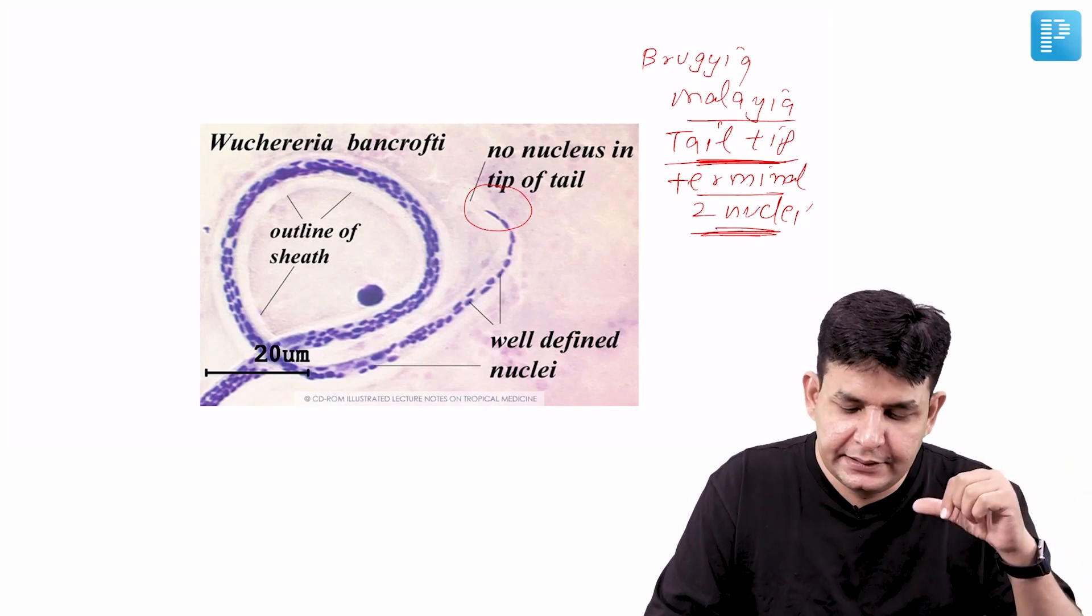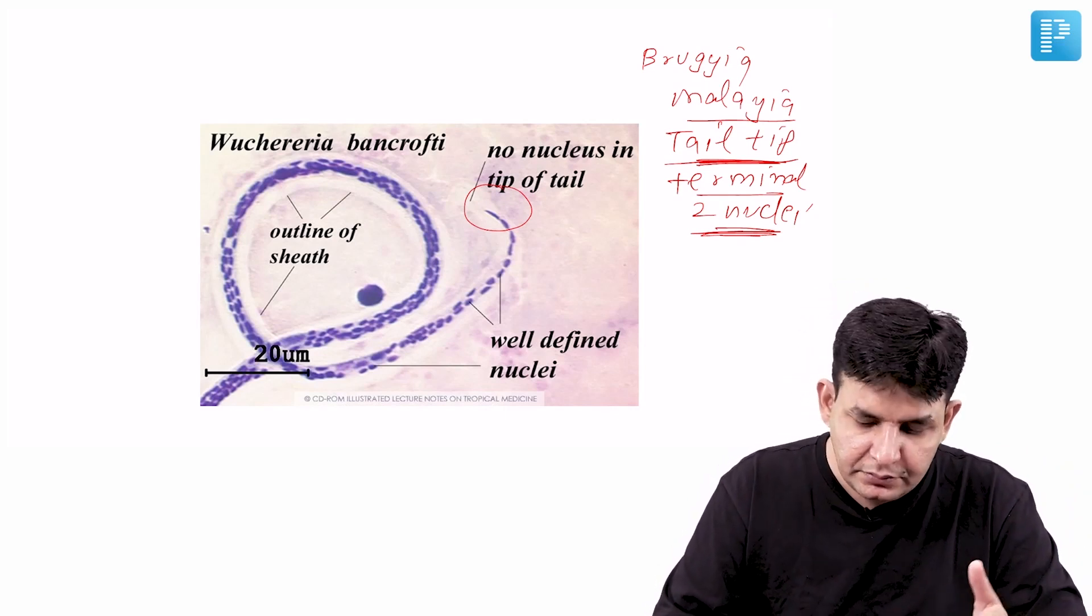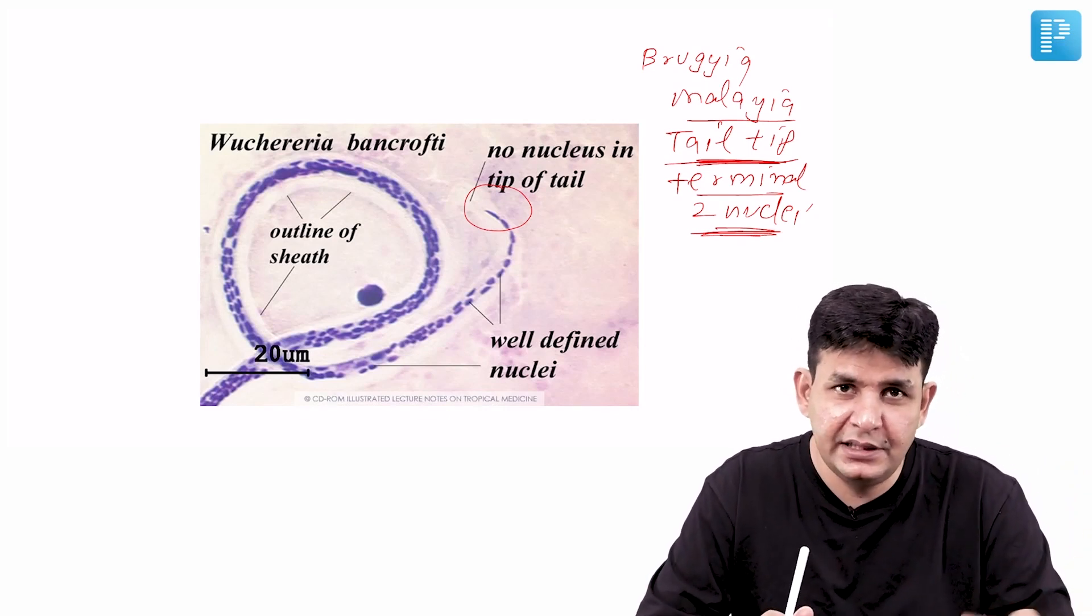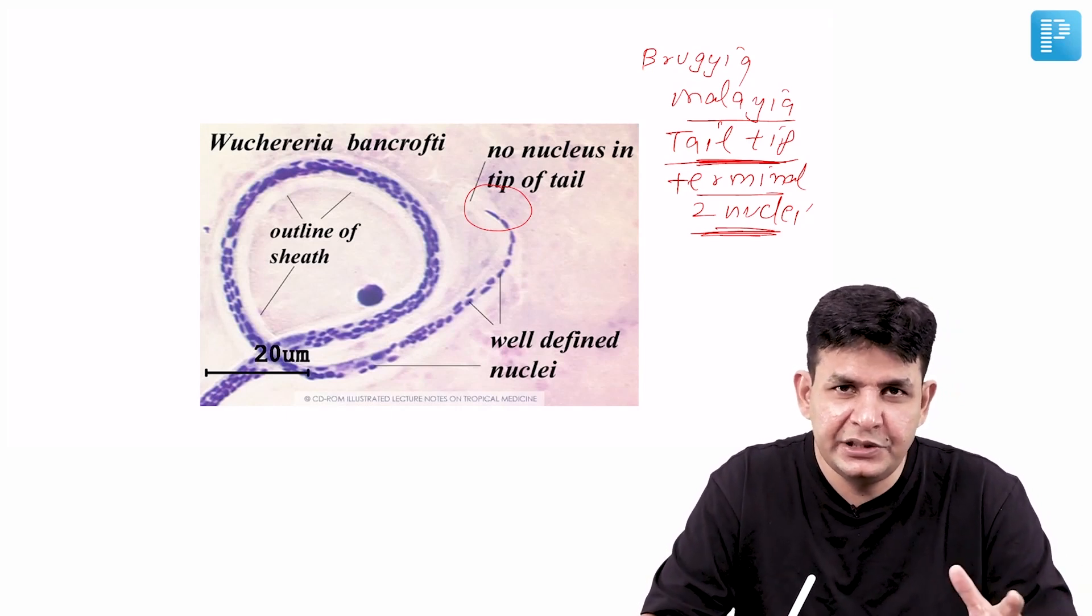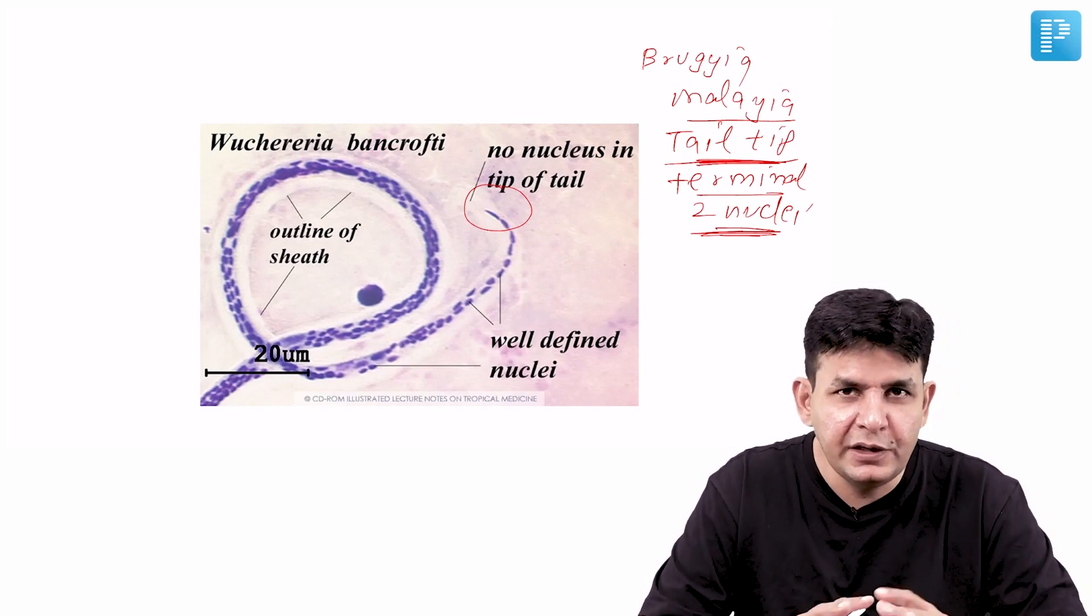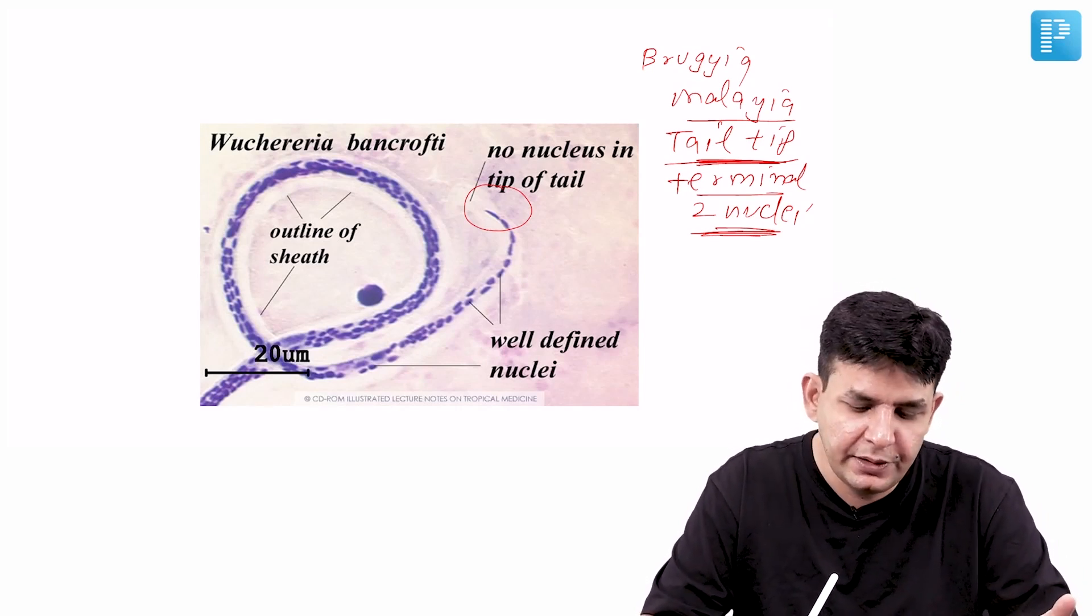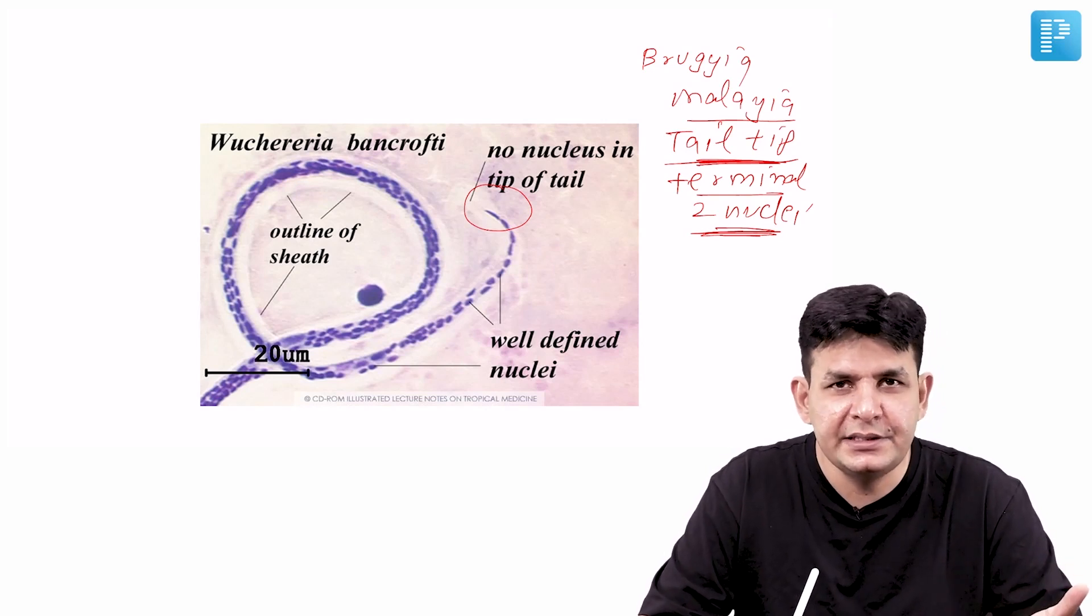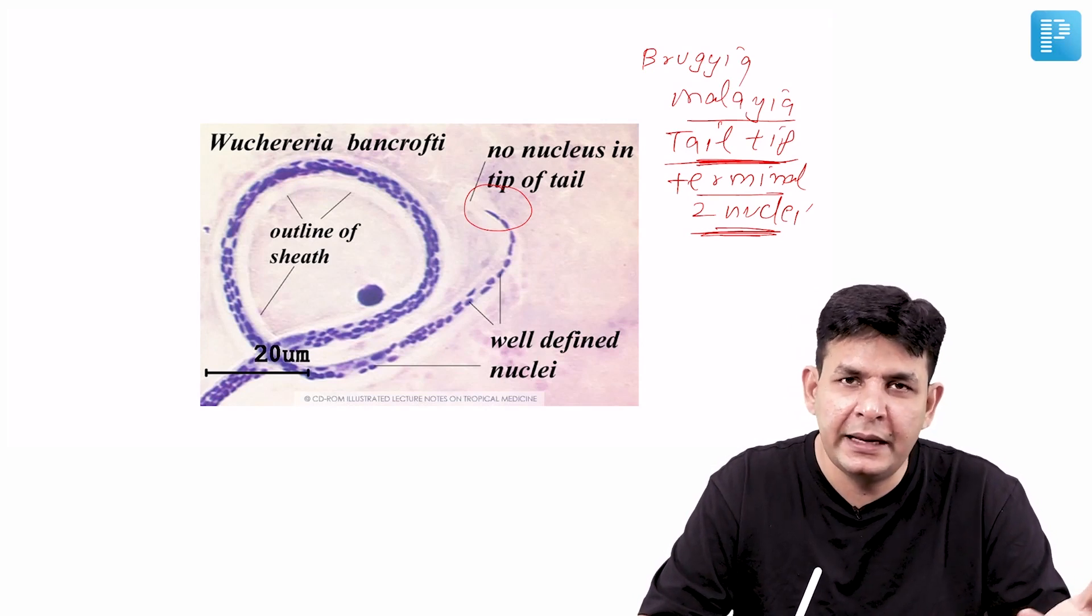Besides that, there was a recent question that in chronic filariasis stage in the scrotum, like a hydrocele patient, when you go for scrotal USG you see a dancing worm sign. Besides that you can get elephantiasis, granuloma breast, chyluria where chyle comes in the urine, and albuminuria where albumin comes in the urine.